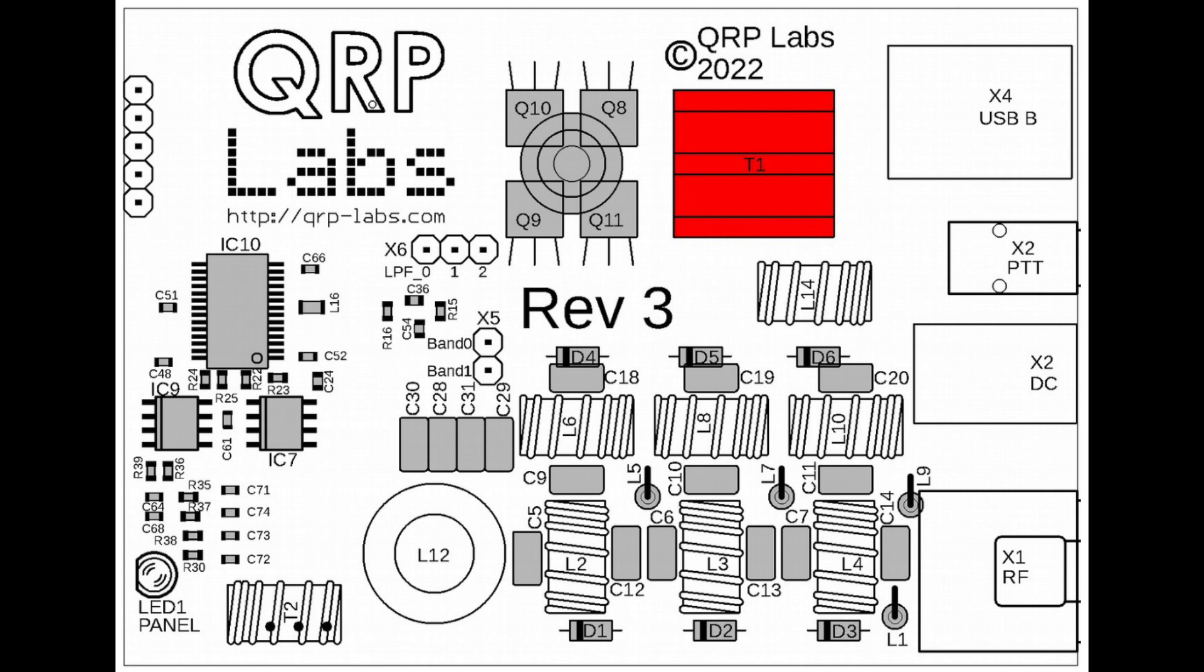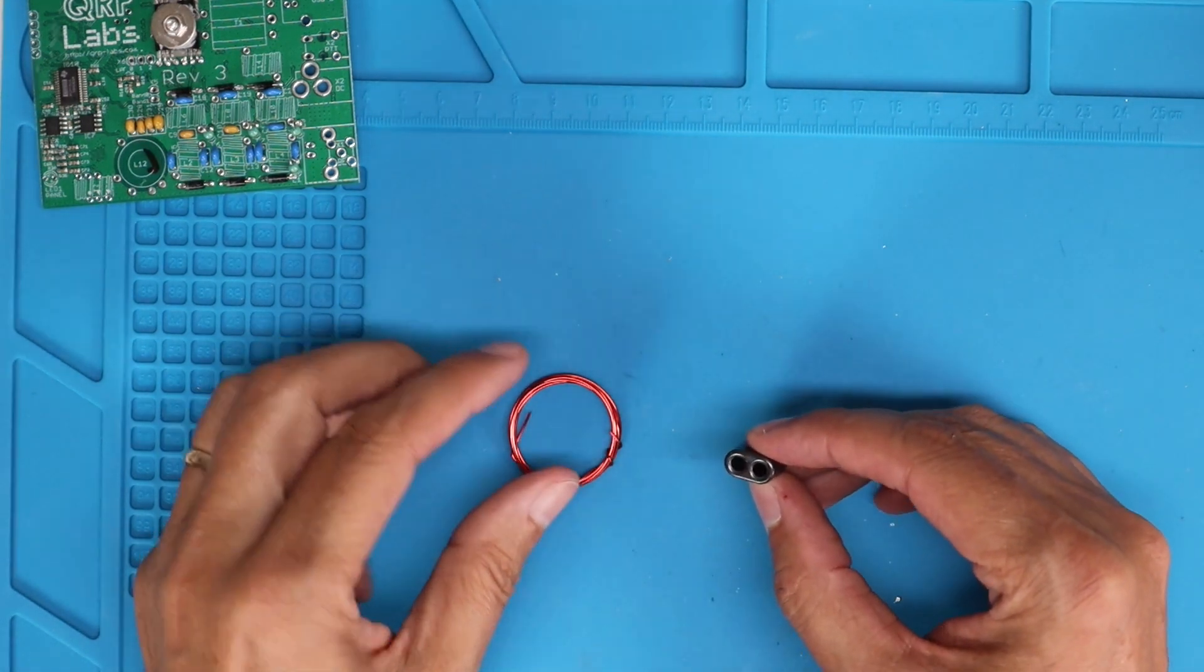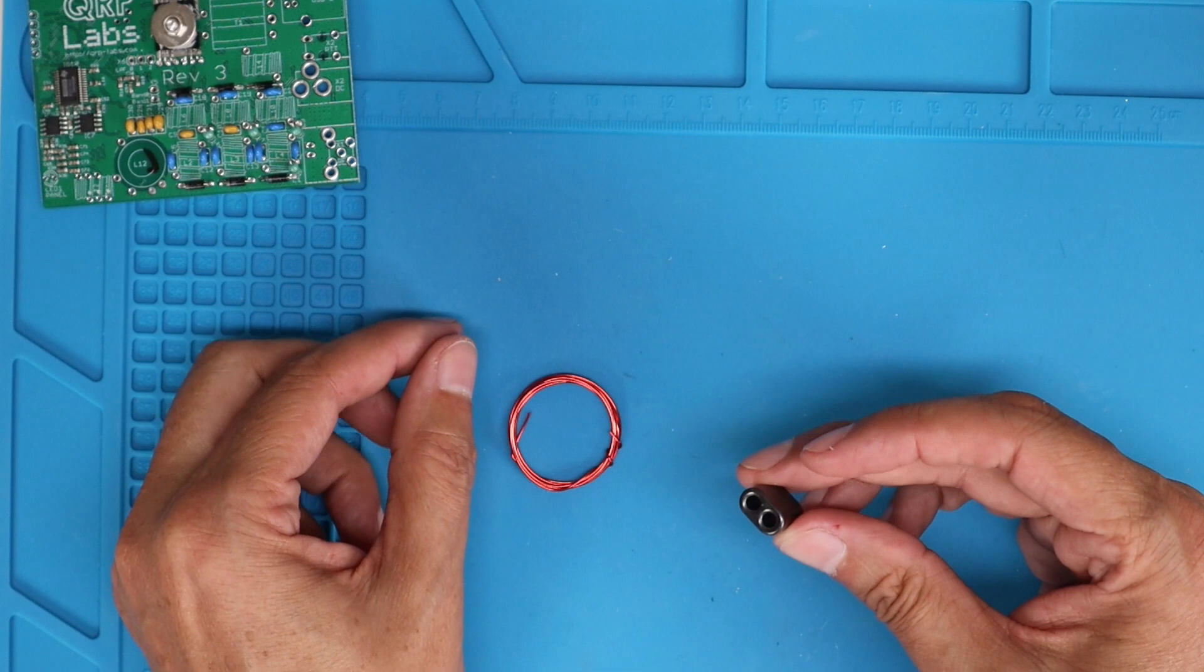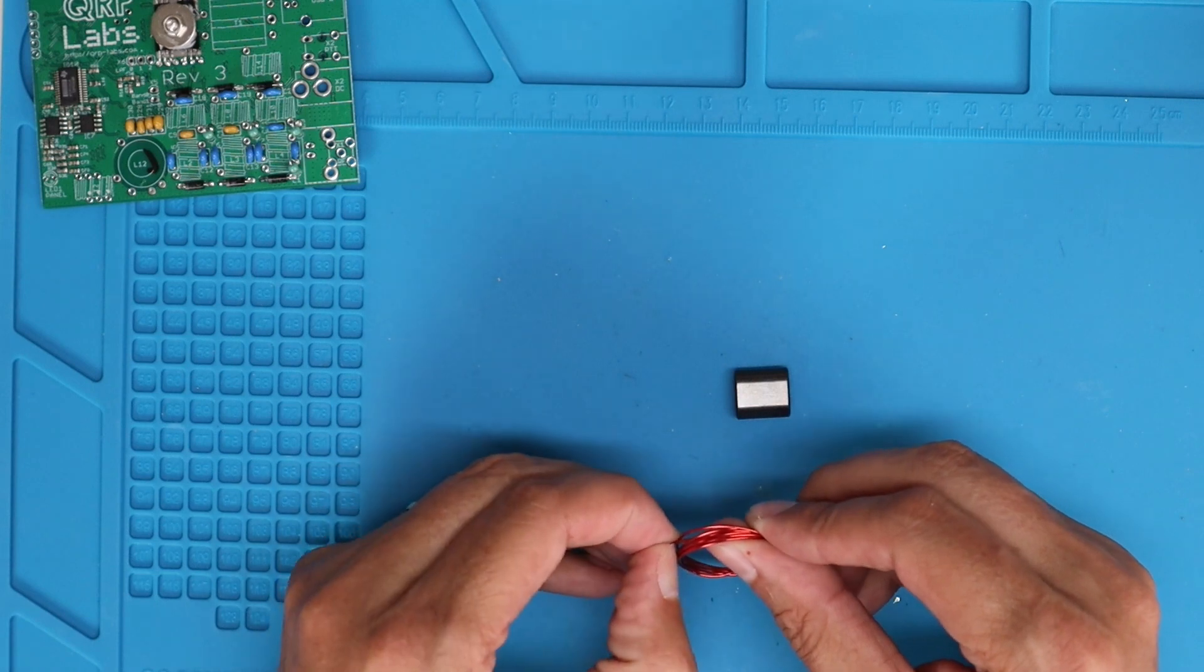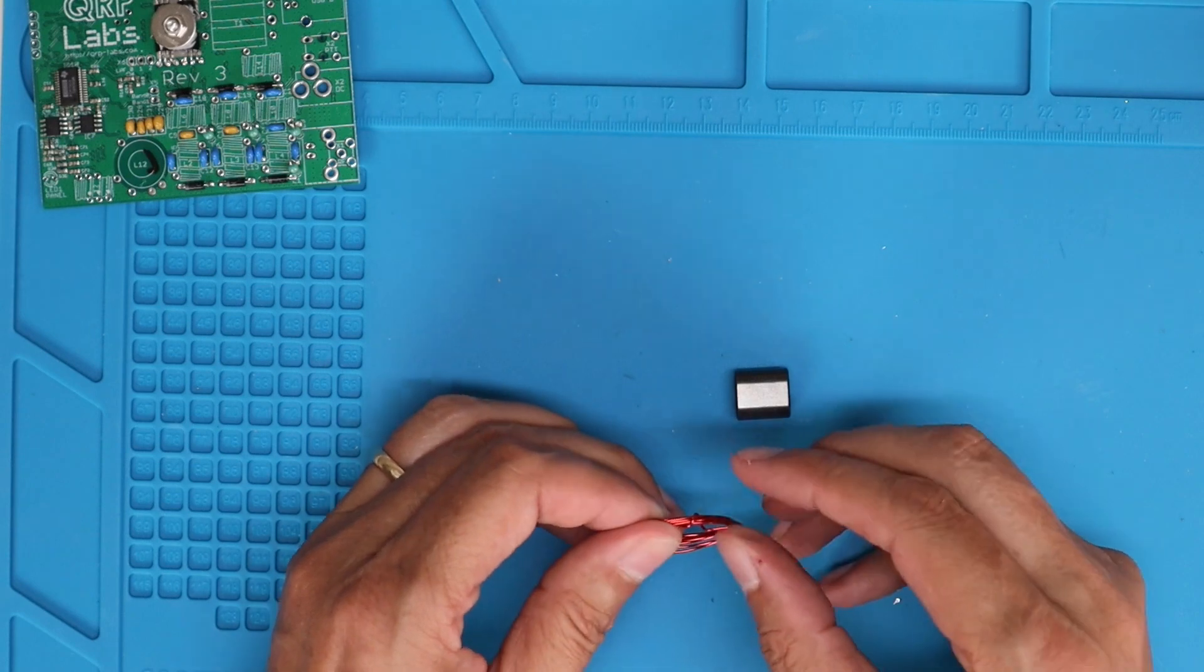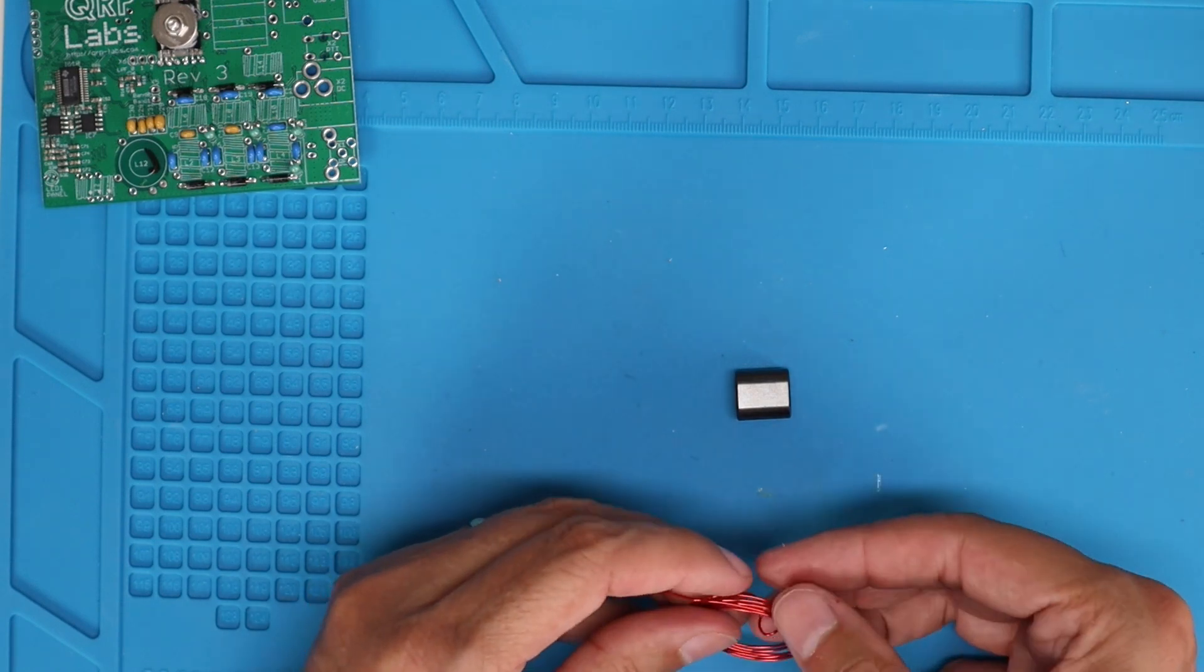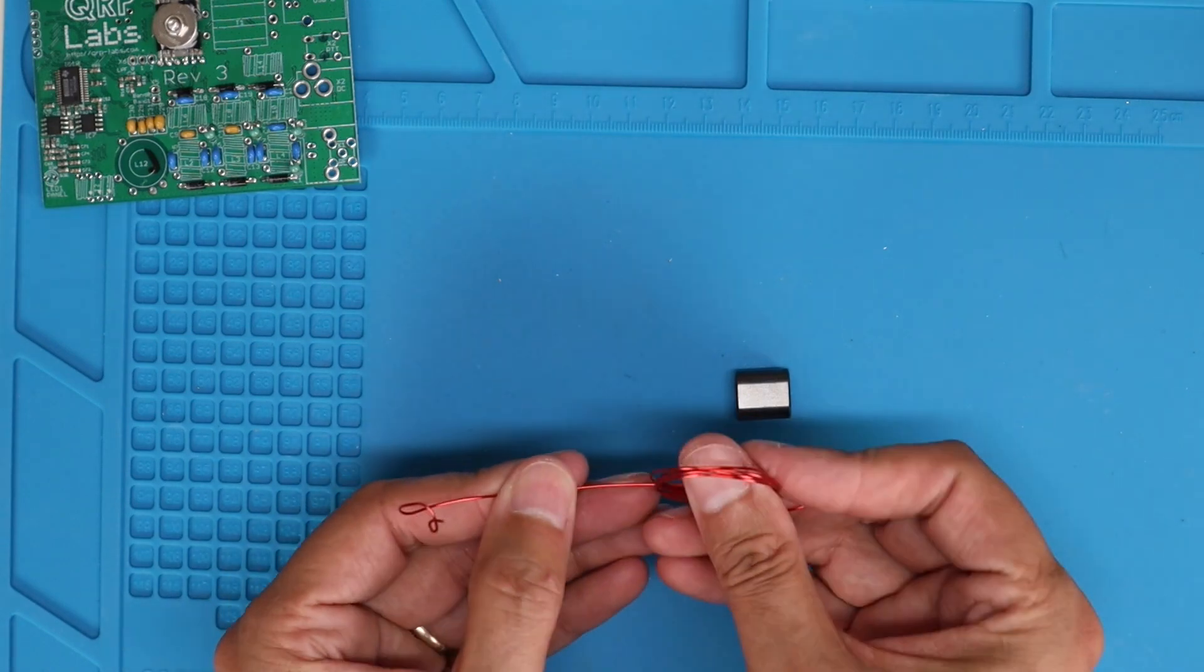So, the next thing we're going to do is we're going to wind T1, which is a binocular toroid, and we're going to use this 22-gauge wire, which is the thicker of the two bundles of wire that you get with the kit. Now, an important thing to note is that I am building this for 12 volts.